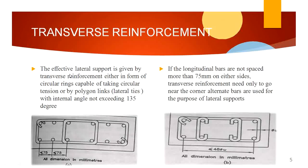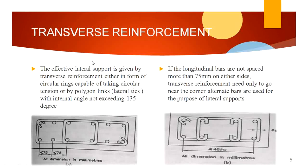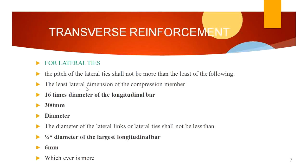This next section covers transverse reinforcement. The criteria for pitch and minimum diameter of bars are given as per IS-456. For the pitch of transverse reinforcement, it should be the least of the following three: the least lateral dimension of the compression member, 16 times the diameter of longitudinal bars, or 300 mm.